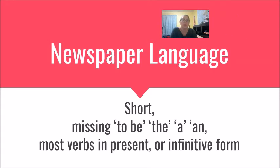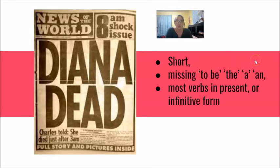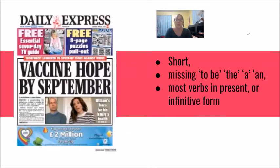For example, let's look at some newspaper headlines together to see this in action. This is a headline from 1997 when Princess Diana died in France: 'Diana dead. Charles told.' We don't see 'Diana is dead' or 'Charles told us' or 'Charles told the newspaper' — we don't see the clarification. We just see this short, shocking headline. Another example: 'Vaccine hope by September.' The full meaning is 'Scientists hope for a vaccine by September' or 'A vaccine is hoped for by September,' but taking away all those extra pieces gives us: 'Vaccine hope by September.'